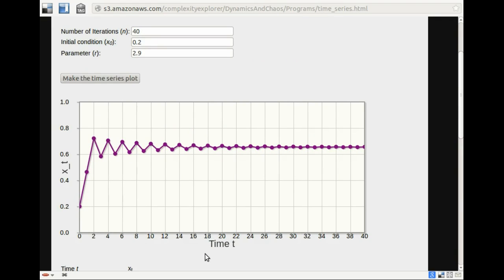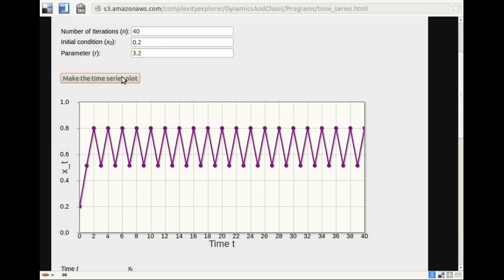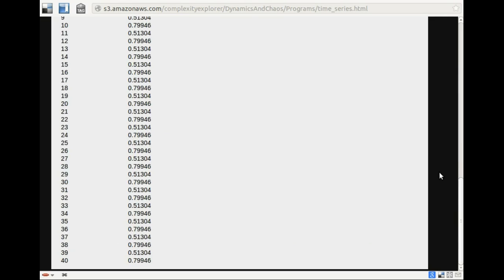Next, let's try 3.2. So I'll go back here, enter a different parameter value, 3.2. And let's make the time series plot. There it is. And here we see a cycle. It's periodic with period 2. And it looks like it's going between .8 and maybe a little more than .5. We can check the numbers and look.